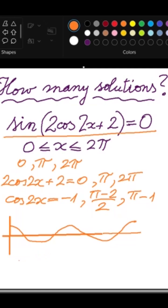Well, if cosine of 2x is minus 1, then as we can see, we will have two intersections with y equals minus 1, which is two solutions.